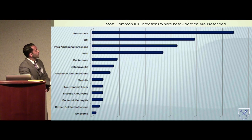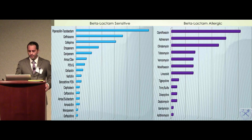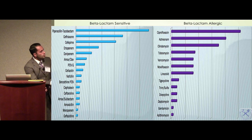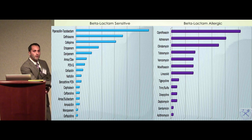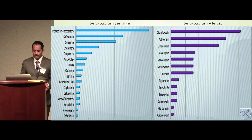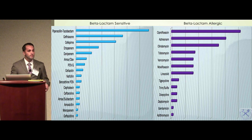When a patient reports a beta-lactam allergy, we're usually treating pneumonia, UTIs, intra-abdominal, or skin infections — and we often switch to quinolones, aztreonam, or clindamycin depending on the infection site. When we're able to do skin testing and confirm there's no true allergy, we can return to more familiar agents like piperacillin-tazobactam, ceftriaxone, or cefepime. Skin testing is probably more accurate, easier, and faster than desensitization.